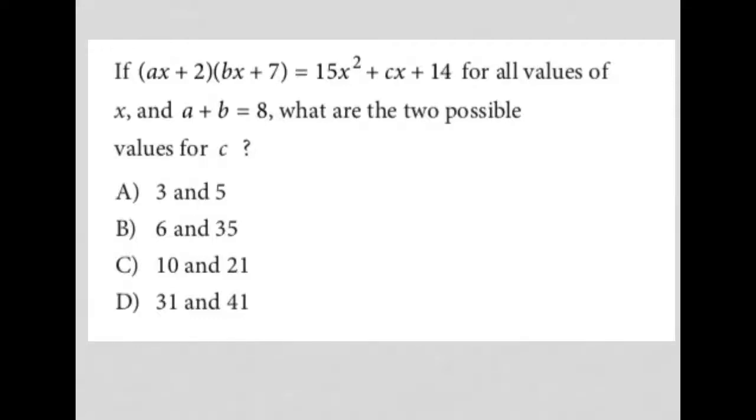So this question says, if ax plus 2 times bx plus 7 equals 15x squared plus cx plus 14 for all values of x, and a plus b equals 8, what are the two possible values for c?